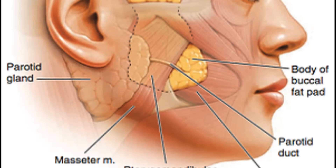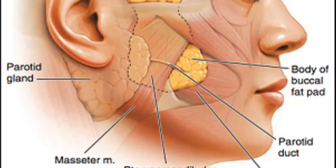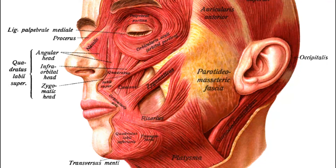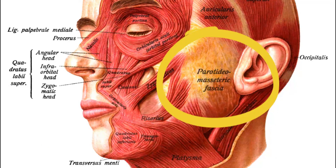The important content in this region is the parotid gland. You have only one muscle and fascia in this region, but you have multiple vessels. You have the masseter muscle and the parotideo-masseteric fascia.